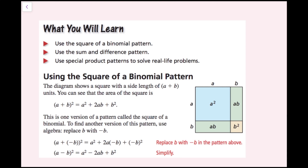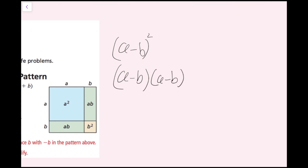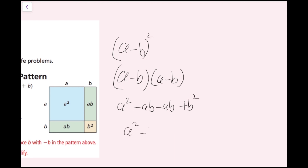I'm going to show you how that works if we FOIL it out. If I had a minus b quantity squared, that's the same thing as a minus b times the quantity a minus b. Using FOIL: first is a squared; outers is a times negative b, so it's minus ab; inners is negative b times a, which is also negative ab; and last is negative b times negative b, which is positive b squared. This becomes a squared minus 2ab plus b squared. The same works for a plus b quantity squared, except the minus 2ab becomes plus 2ab.